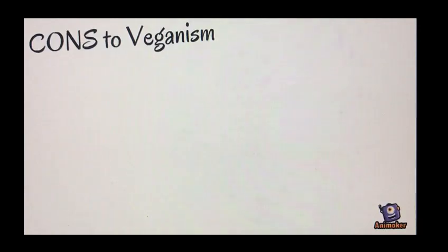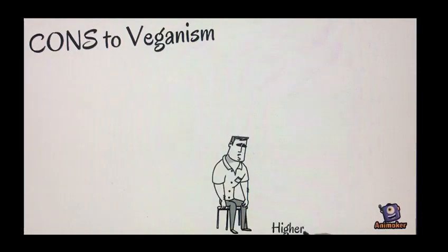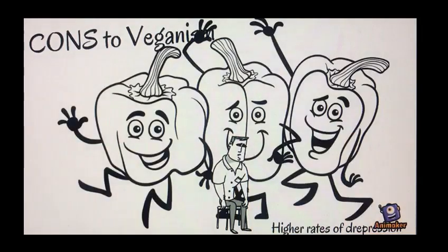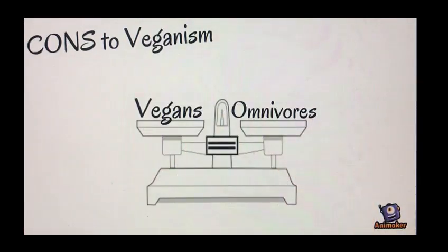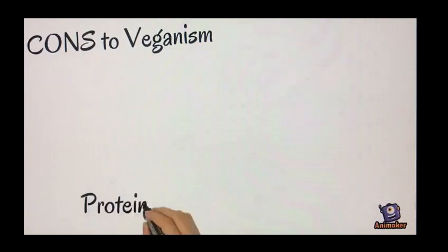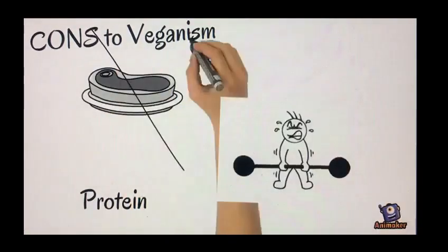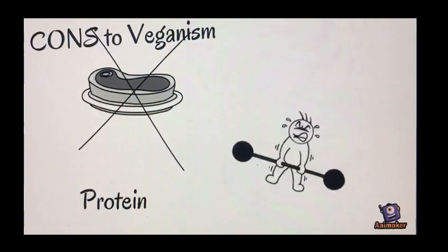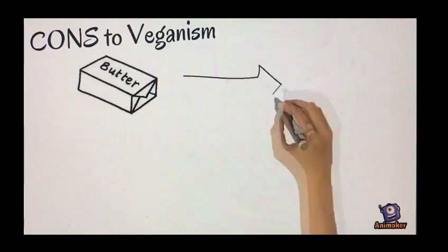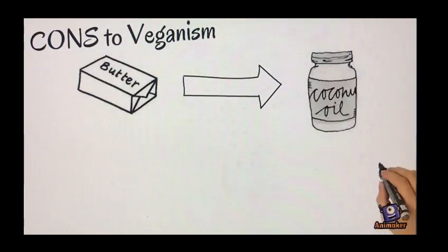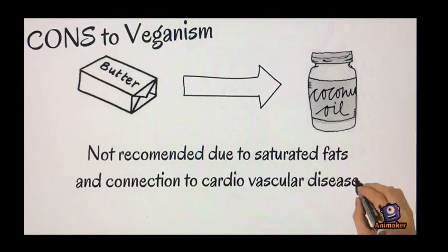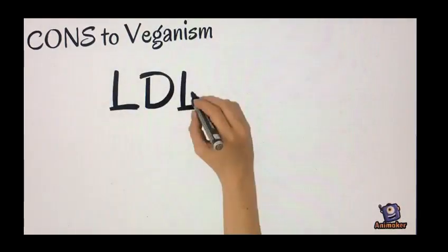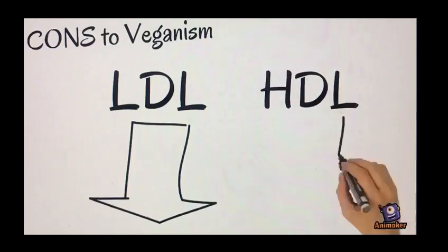A study by Hibben, Northstone, Evans, and Golding stated that there is a correlation between higher rates of depression and veganism or plant-based diets. There is no significant difference in the risk of metabolic syndrome between vegans and omnivorous diets, and there has also been no advantage seen in chronic disease patterns in vegan diets. Due to high protein density in meat and other animal products, there could be a potential for protein deficiencies. Many individuals who adopt a vegan or plant-based diet tend to use coconut oil in replacement of butter. The American Heart Association does not recommend consuming coconut oil, as it is made primarily of saturated fats, which have been linked to cardiovascular disease risk. Even though many vegans have lower LDL levels, there are also lowered amounts of HDL, which is beneficial to have.